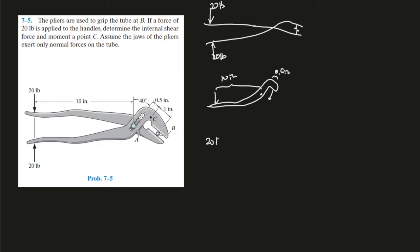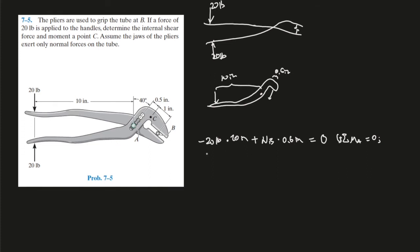So we have 20 pounds times 10 inches, and this is going a clockwise direction, so that is negative. And plus, so this is going positive, and look, this force is a normal force, and it's perpendicular. Normal force is always perpendicular to the surface. So the force is actually going this way.